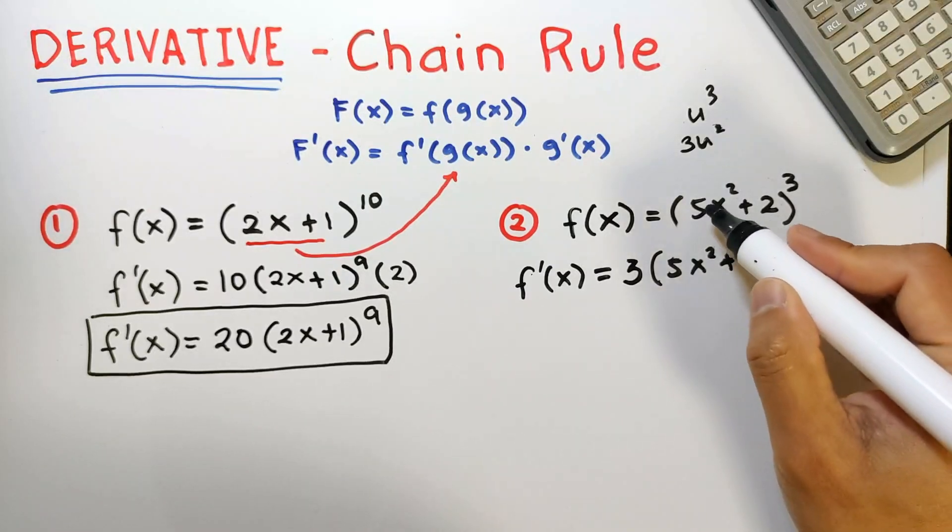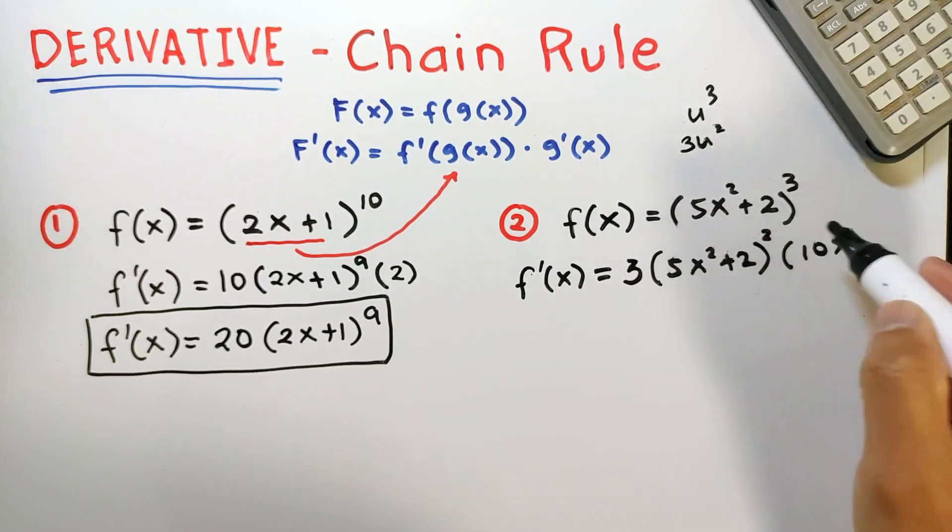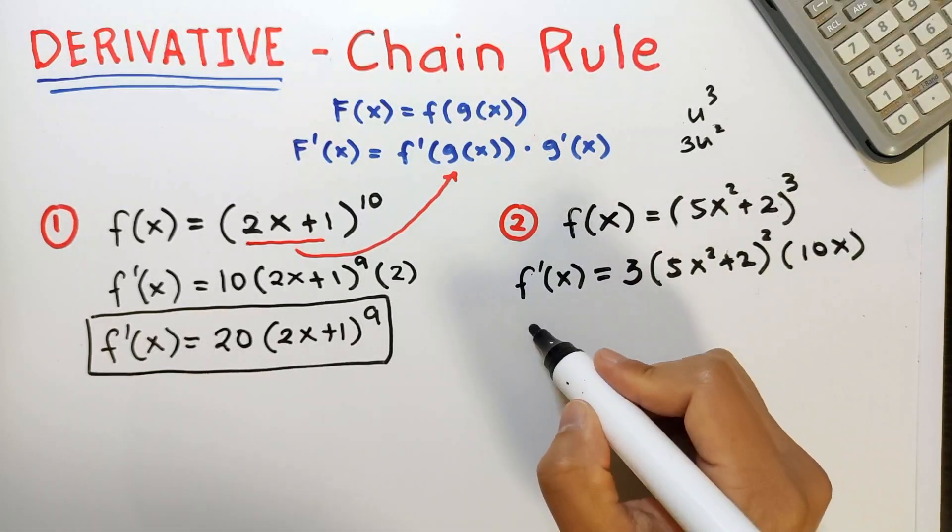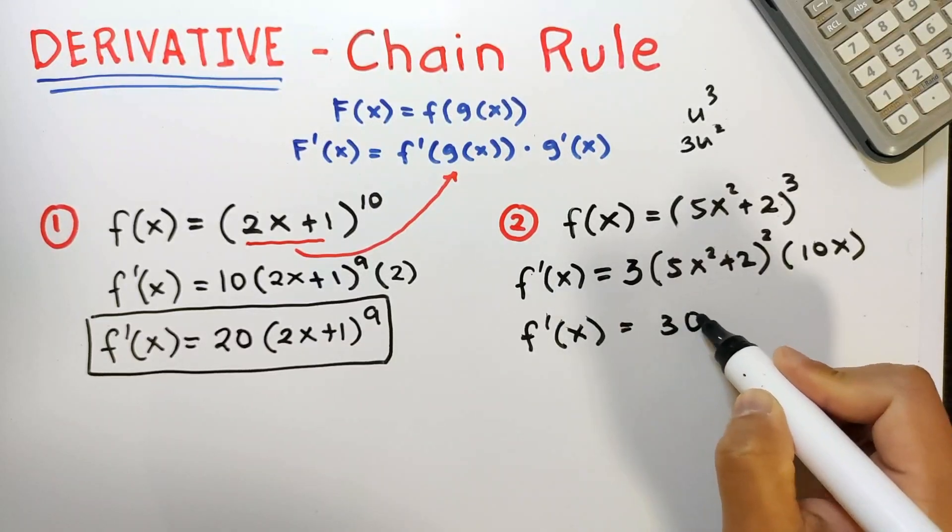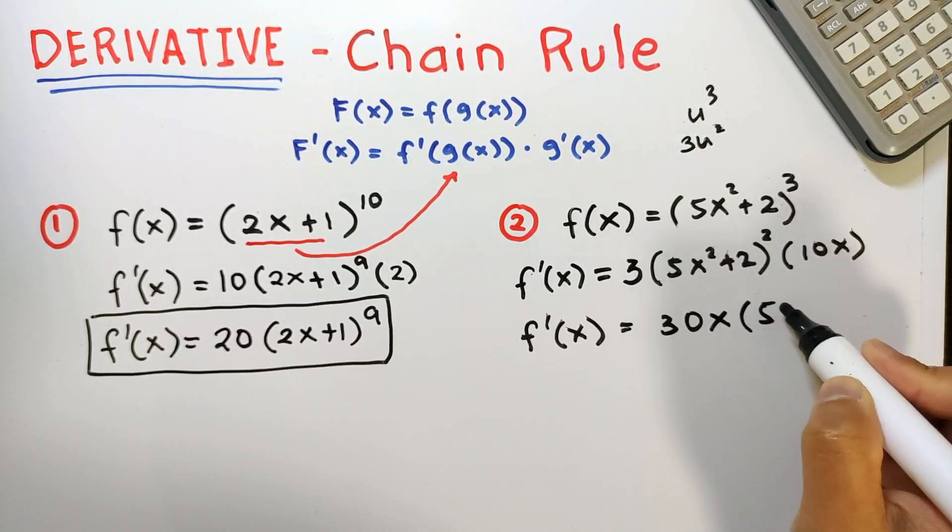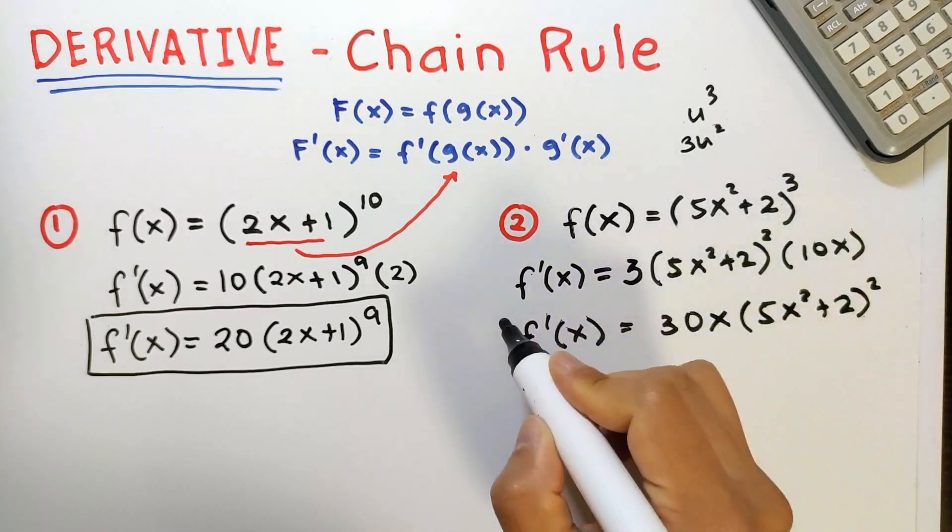So that's the derivative of 5x squared is 10x. Then derivative of 2 is 0. So now we have this. Let's simplify. Multiply 3 and 10, so we have 30x, and then copy 5x squared plus 2 squared. So this is the final answer.